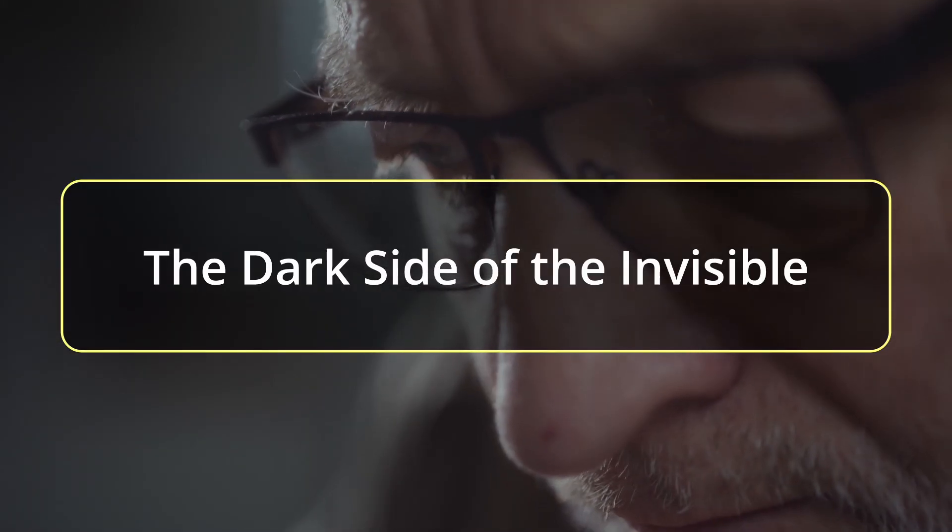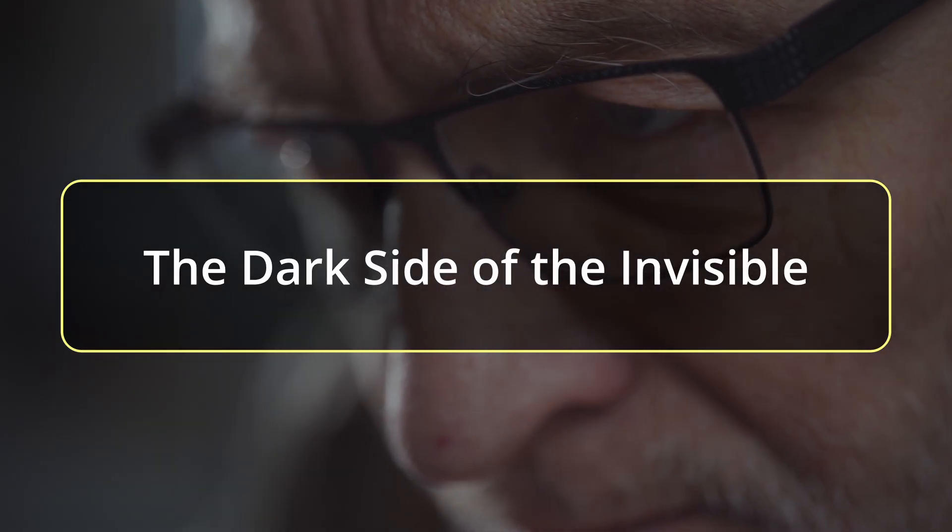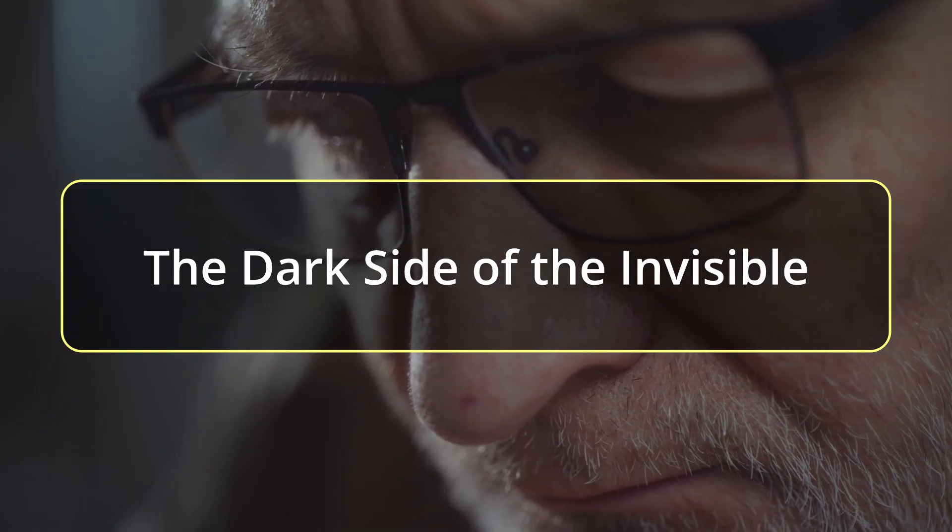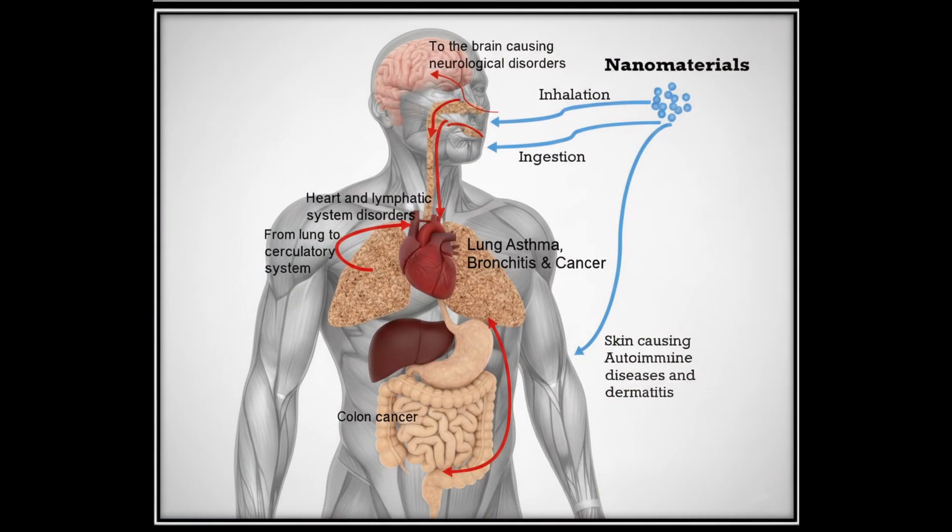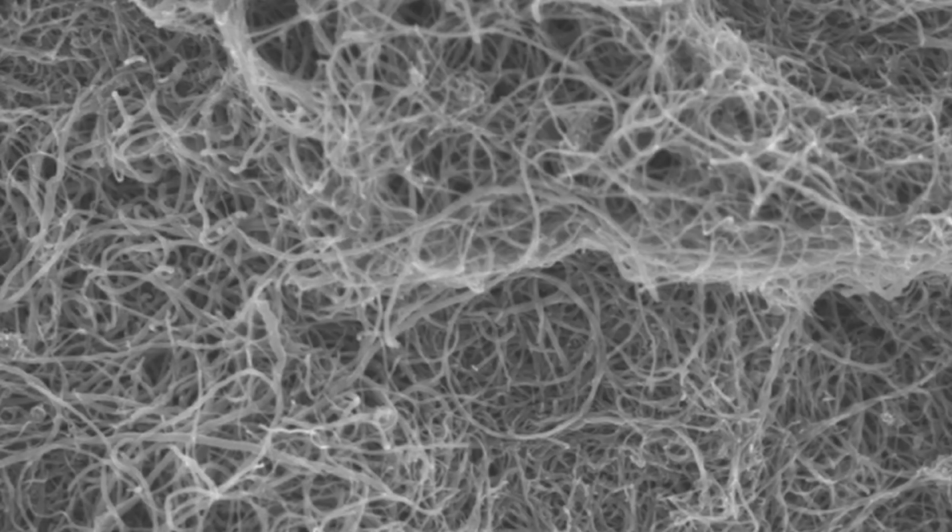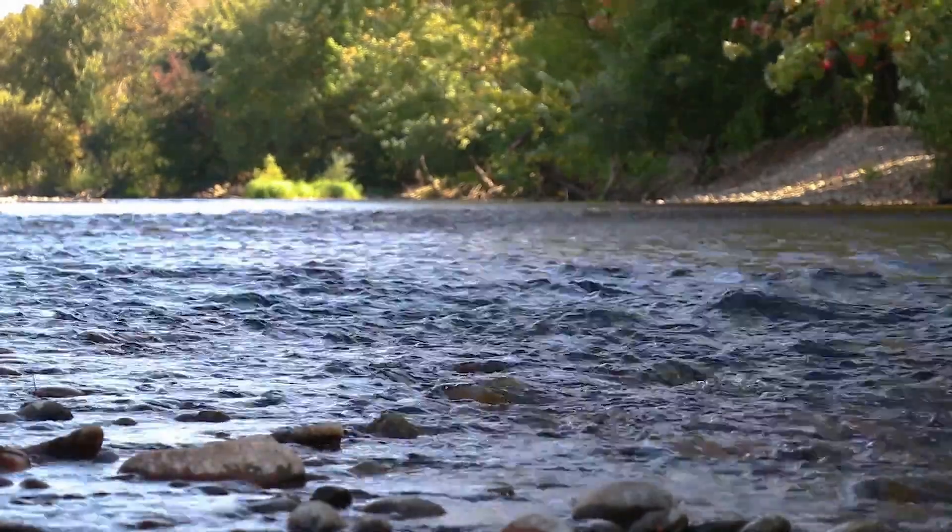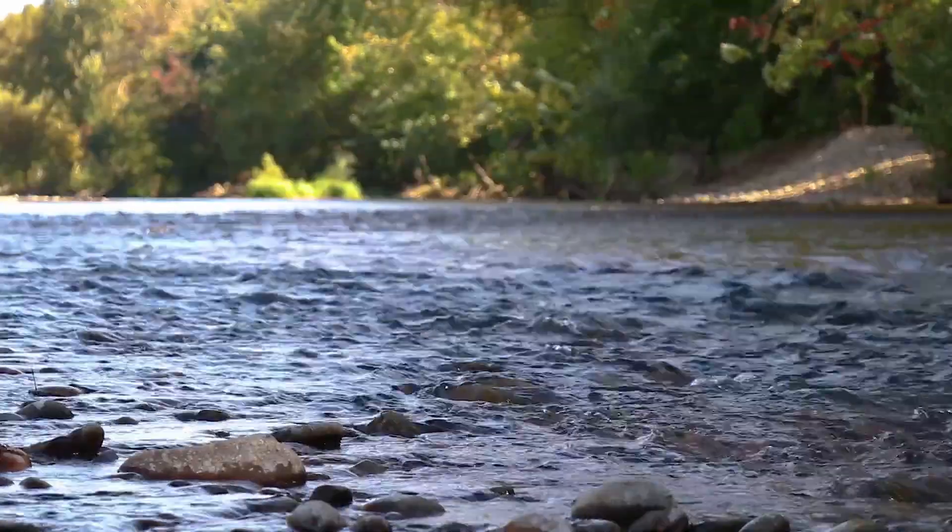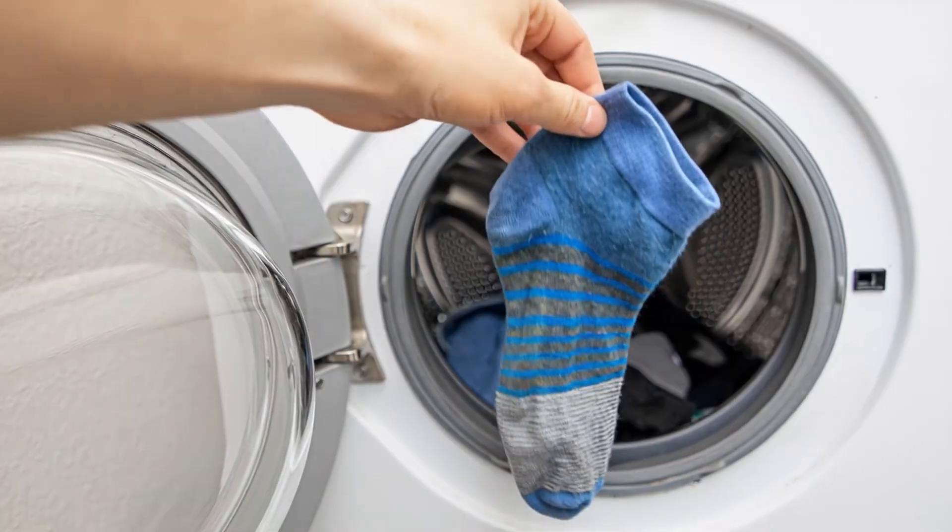But with such great power comes great responsibility and significant concerns. Due to their tiny size, nanoparticles can easily penetrate our bodies through inhalation, skin, or ingestion. Materials considered harmless at larger scales can become harmful at the nanoscale, like certain forms of carbon nanotubes that are considered as dangerous as asbestos. Then there are environmental risks, like the contamination of water and soil from products like socks with silver nanoparticles.